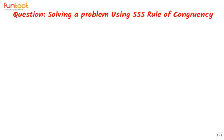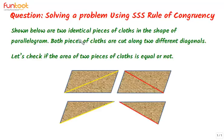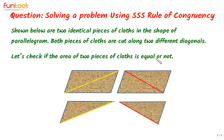Let's do a problem where we cut a piece of cloth in two different ways but get the same area. Shown below are two identical pieces of cloth in the shape of a parallelogram. Both pieces of cloth are cut along two different diagonals. Let's check if the area of the two pieces of cloth is equal or not.